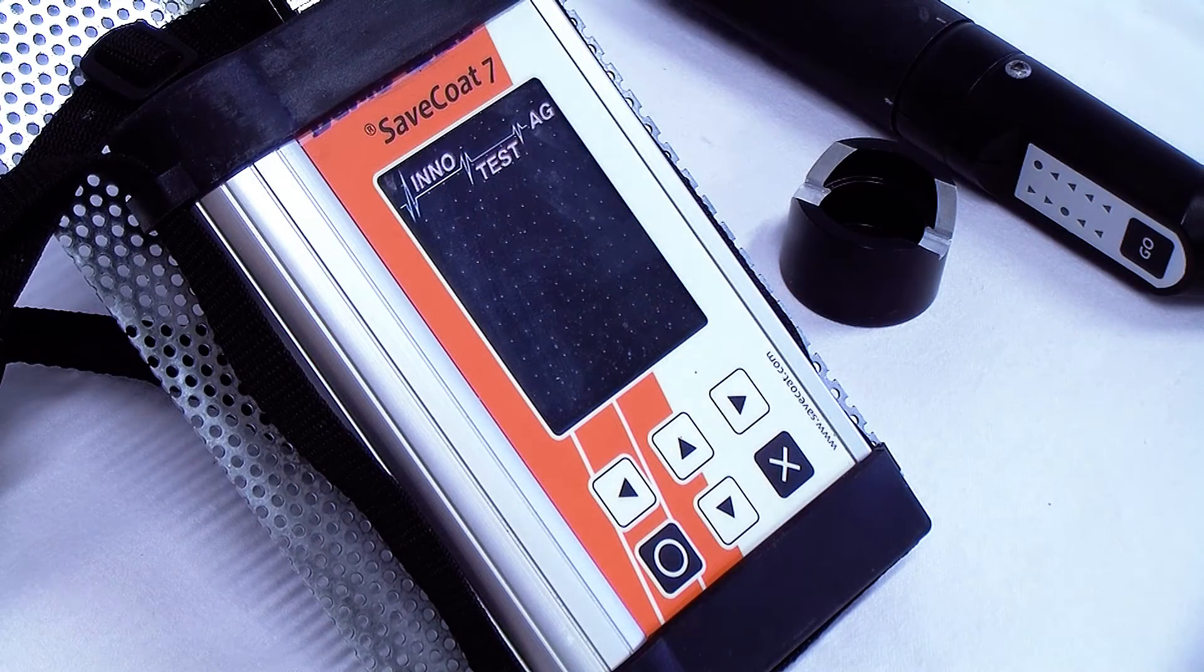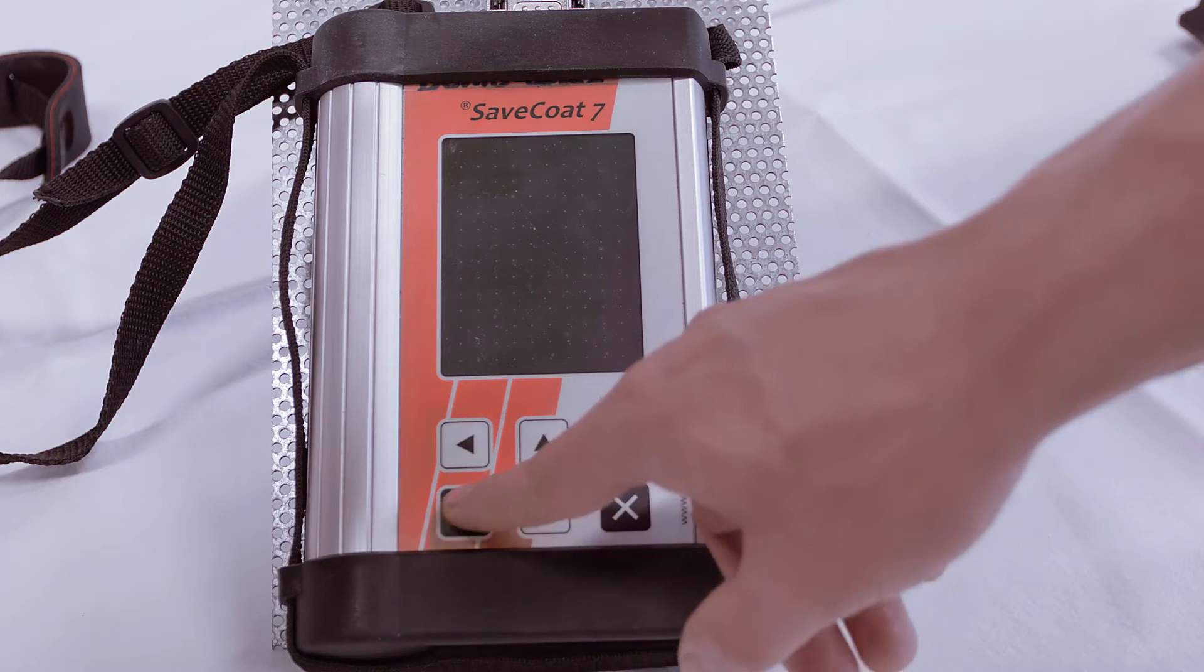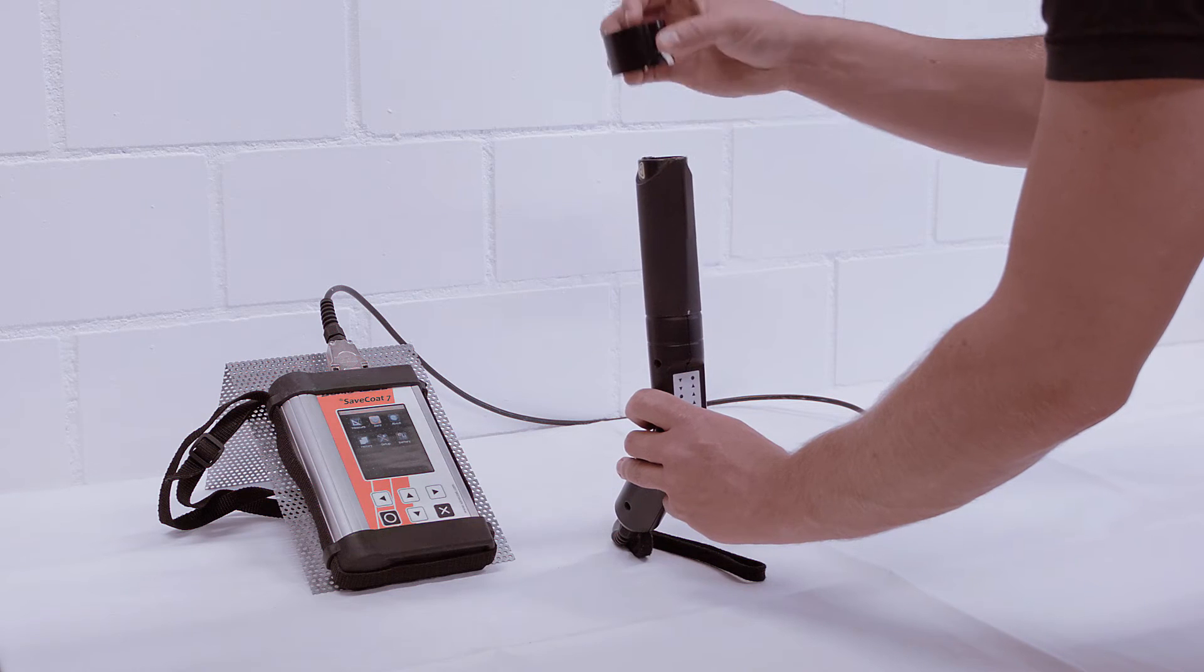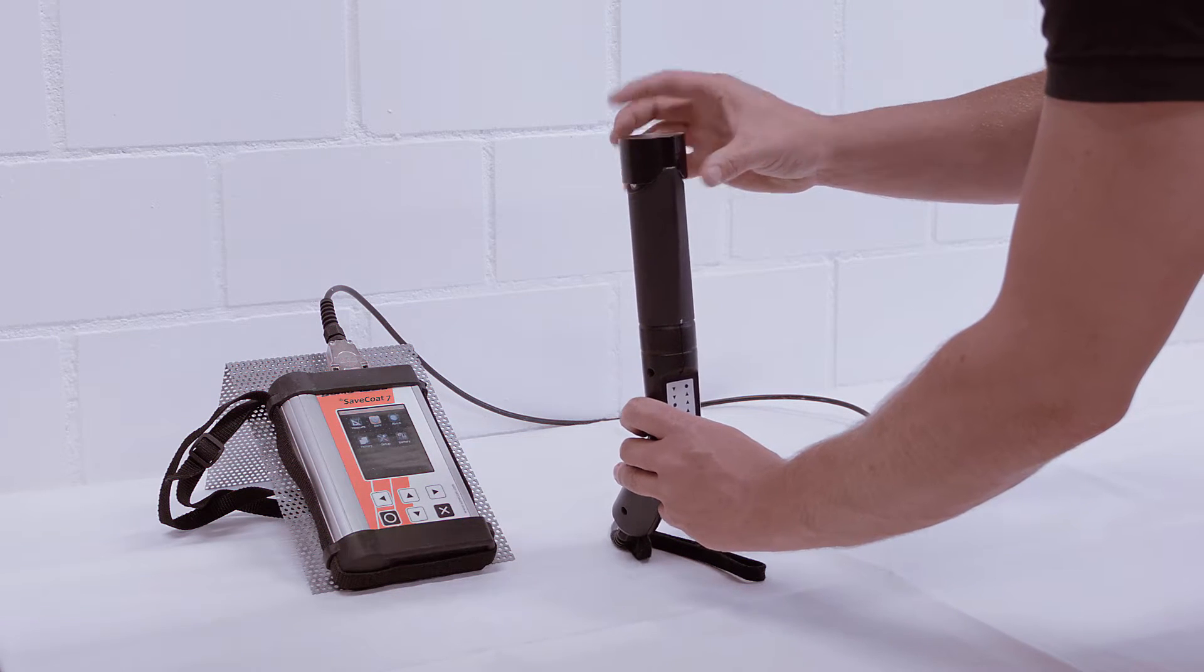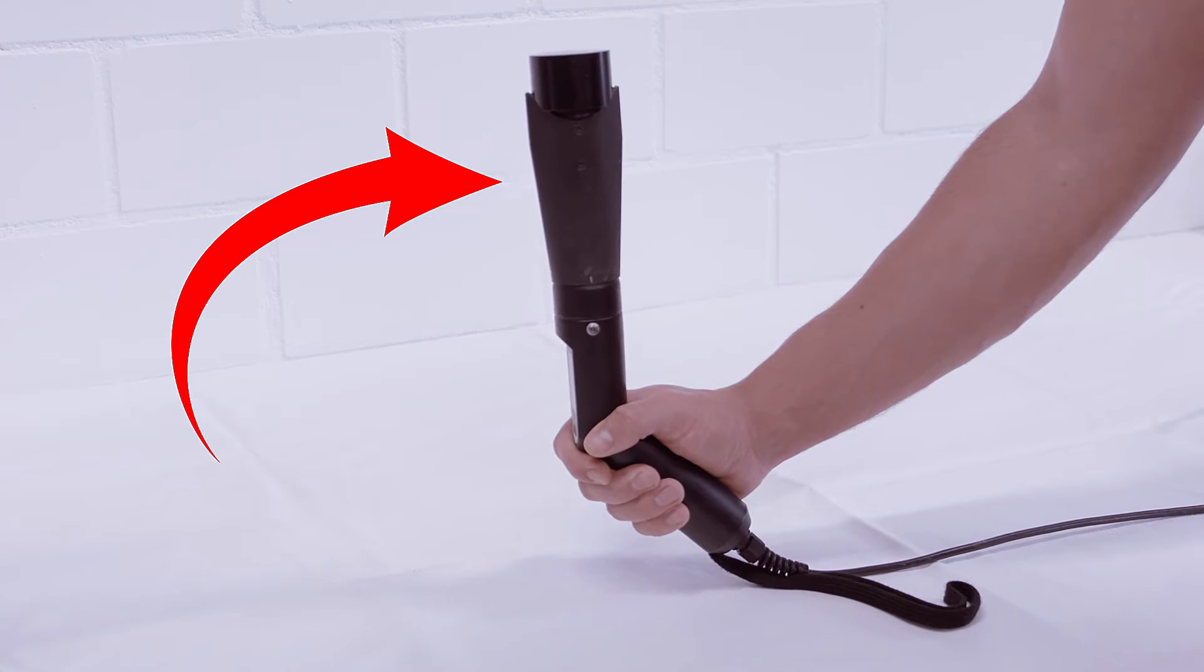You will experience next how it works. First start the unit with the O button and put the reference block on top of the sensor gun to do the zeroing. It's very important to hold the sensor gun vertically up into the air.